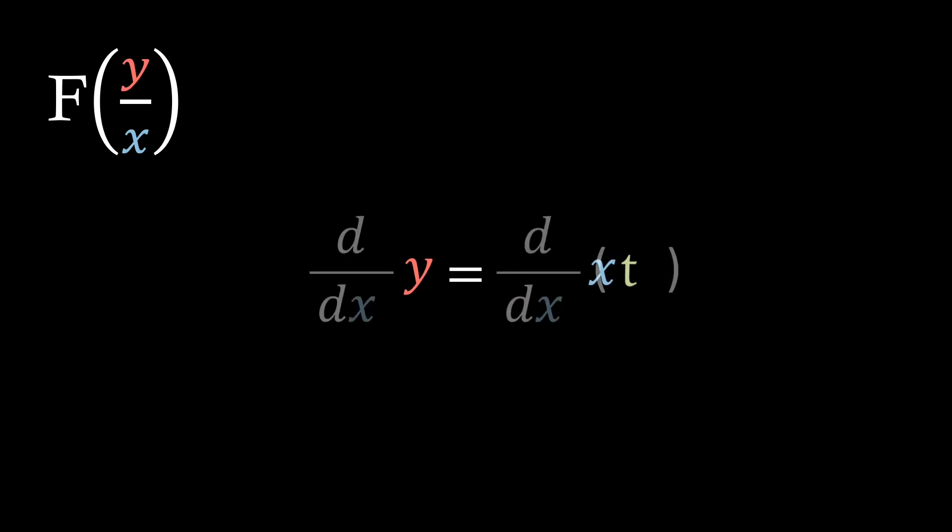Let's say we've found a homogeneous type equation. So let's just let y over x equal the function t. If we now multiply both sides by x we can quite easily find an expression for dy over dx. This just requires us to differentiate both sides in terms of x.